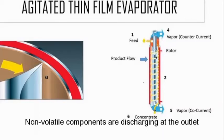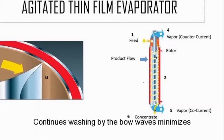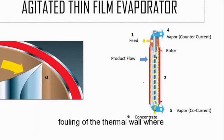Heavier components are discharged at the outlet. Continuous washing by the rotor blade minimizes fouling at the thermal wall, where product or residue is concentrated most.